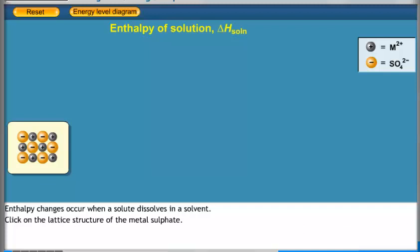Enthalpy changes occur when a solute dissolves in a solvent. Click on the lattice structure of the metal sulfate.